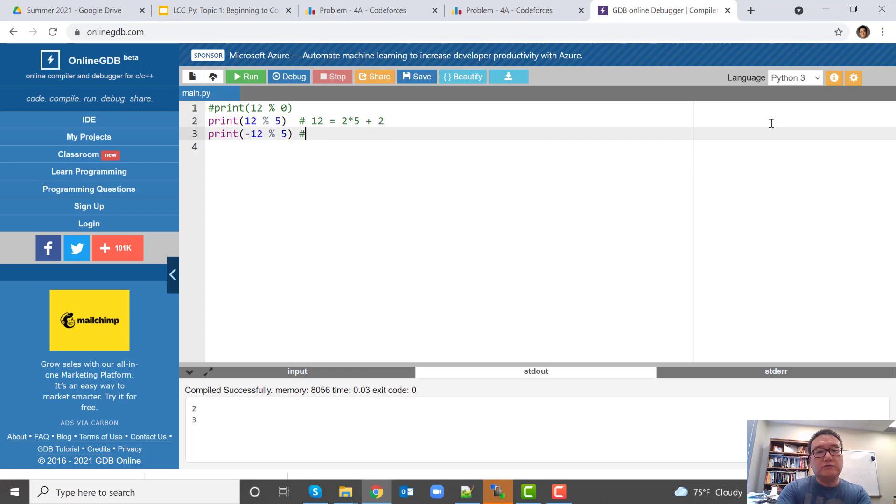Now if we apply the same rule on negative 12, what we get is we want some integer multiply 5 and then plus something. The way to do it, you can think we want to find a multiple of 5 that's less than negative 12. So then that will be negative 15. So in order to get negative 15, I'll have negative 3 here. And then if you have negative 15, I need a plus 2.